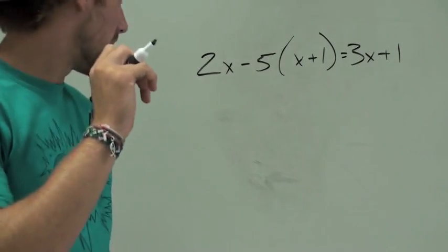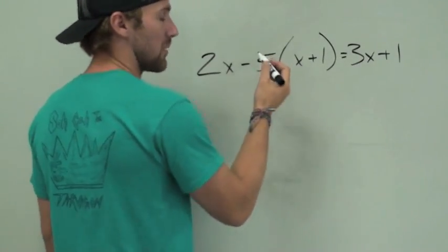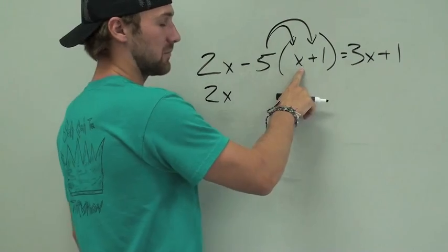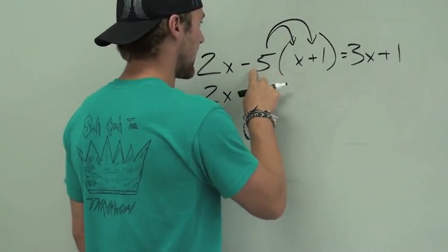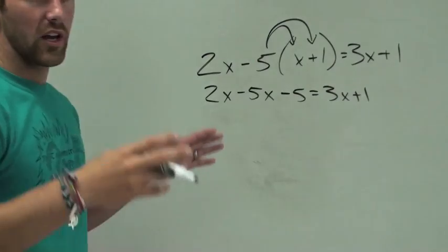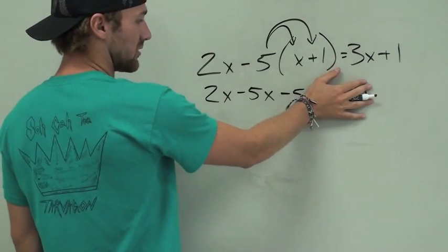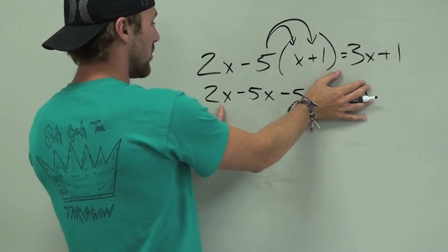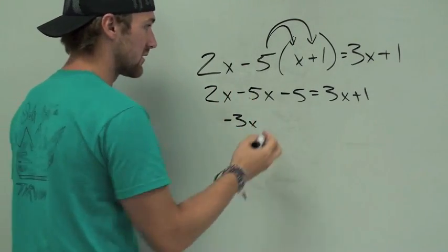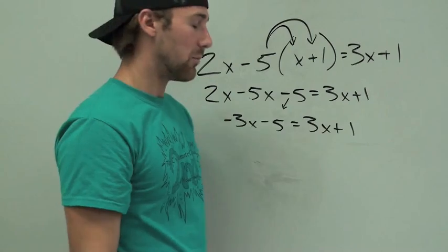Looks big and complicated — take it one step at a time. First of all, we've got a negative 5 in front of our parentheses. So we distribute it in there to both of those. Bring everything down. Negative 5 times x is negative 5x. Negative 5 times positive 1 is negative 5. So negative 5x minus 5 equals 3x plus 1. Now, once again, we're going to get all our x's on one side and all our numbers on the other side. First, we can simplify stuff on the same side of the equal sign. Anything that goes together? Yes — 2x and 5x. 2x minus 5x is negative 3x. All you do is 2 minus 5, which would be negative 3. Keep it in front of the x. Bring down the negative 5, and then bring down everything else. It's like playing a PlayStation game on an Xbox — they don't mix together.